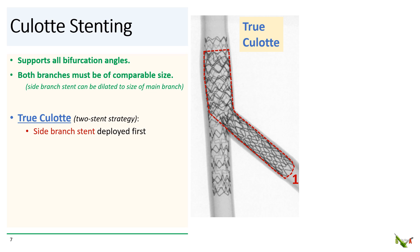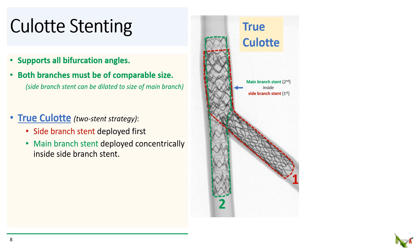So there are two variations of culotte: true culotte and reverse culotte. Traditionally, true culotte is used in a primary two-stent strategy where you intend to stent both branches. In this case, the first stent is deployed in the side branch, usually the branch with the greatest angulation. After the side branch stent is well post-dilated, the main branch stent is then deployed through the stent cell of the side branch stent, so its proximal part ends up concentrically inside the proximal part of the side branch stent.